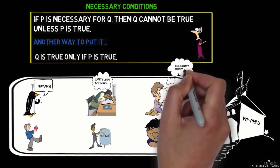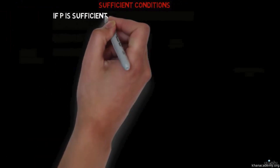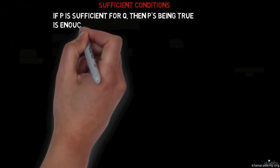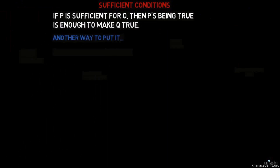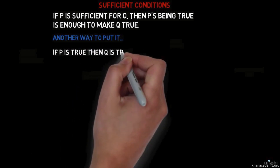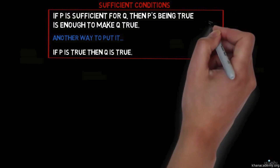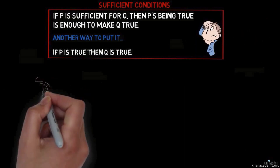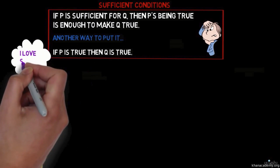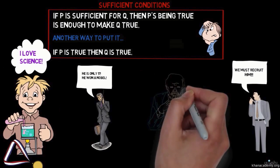Now what about sufficient conditions? If P is sufficient for Q, then P's being true is enough to make Q true — if P is true, then Q is true. It's a little harder to think of a sufficient condition for getting accepted to a university, but consider some 17-year-old who just won the Nobel Prize in Chemistry. Seems like that's pretty sufficient for getting accepted.